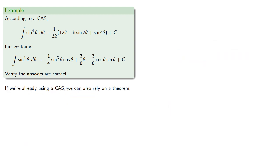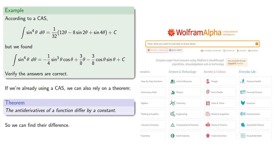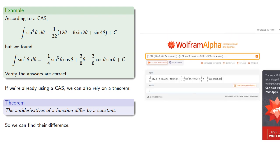However, if we're already using a computer algebra system, we can also rely on a theorem. The antiderivatives of a function differ by a constant. And so we can find their difference. And since the difference is a constant, then both are antiderivatives.